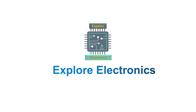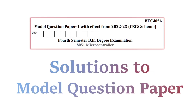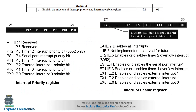Welcome back to Explore Electronics. This is the last part of the solution to the model question paper on microcontrollers. The fourth module question asks to explain the structure of the interrupt priority register and interrupt enable register — two registers related to interrupts.